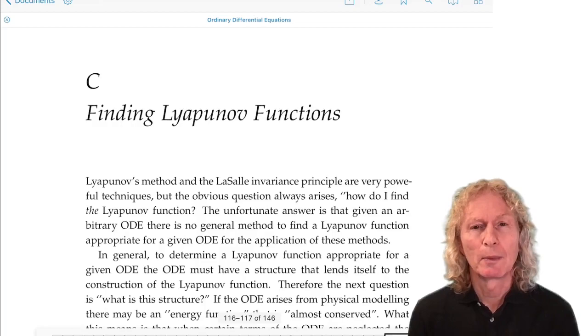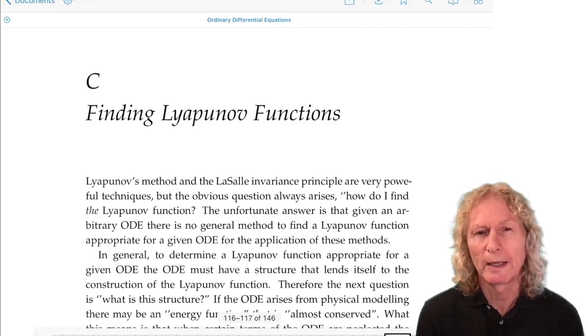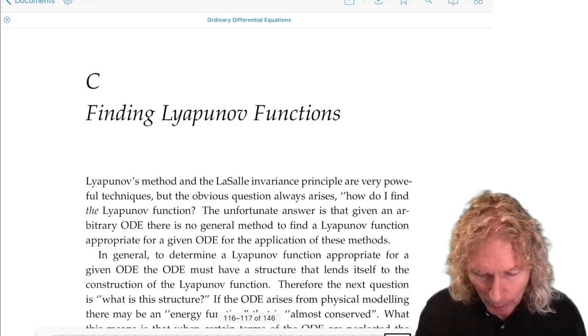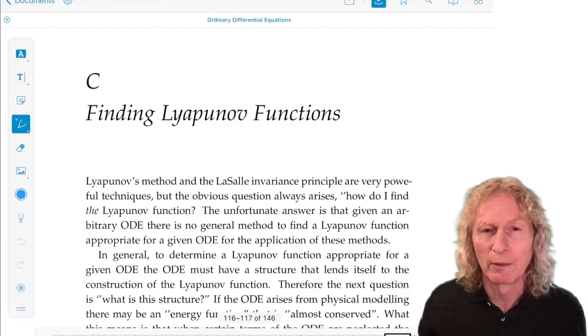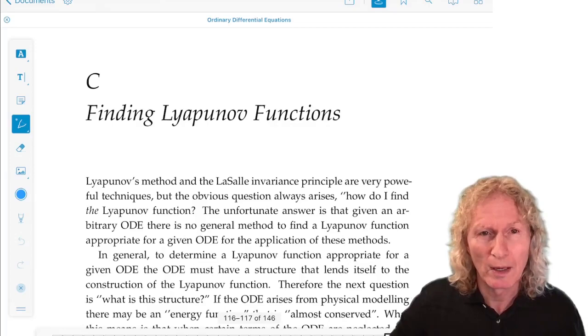When I developed Lyapunov's method and the LaSalle invariance principle, I always pulled out these functions, I think I called them v of x, and they had the nice properties that made things work. And whenever I do this in class, students always say, how do I find Lyapunov functions in general?